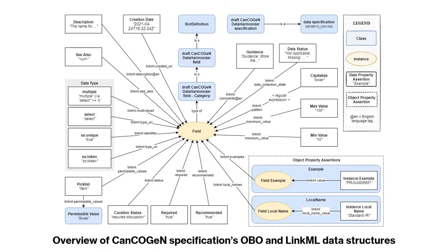Looking at an overview of the CanCOGeN specification using OBO and LinkML data structures: within the specification we're using broad field categories as classes, and individual fields are being instantiated as instances — also known as individuals — to be represented in the structure. For example, a class could be the sequencer, and a specific sequencer model, while the instance would be that genome sequencer's unique instance of existing in your laboratory.